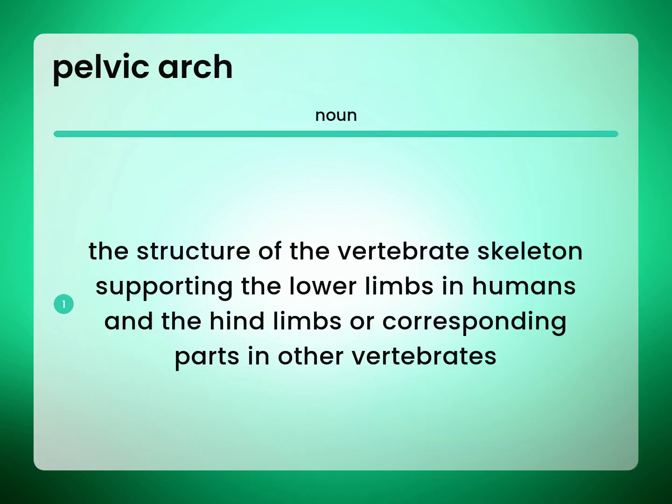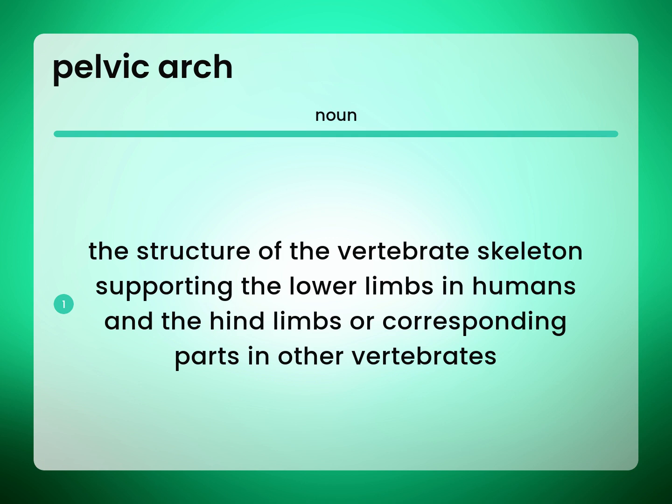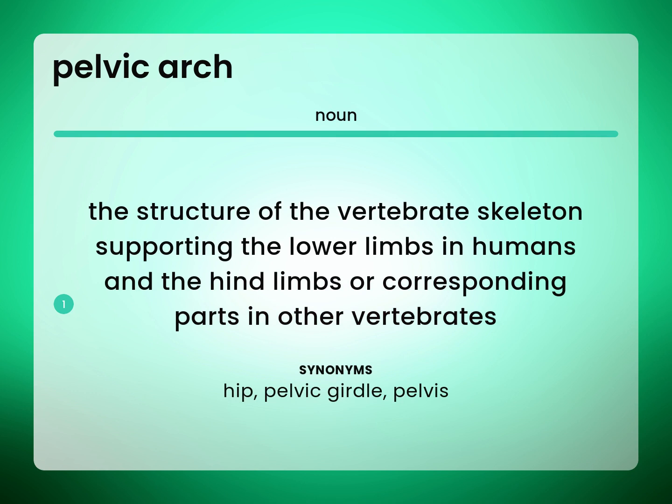The structure of the vertebrate skeleton supporting the lower limbs in humans, and the hind limbs or corresponding parts in other vertebrates. Hip, pelvic girdle, pelvis.